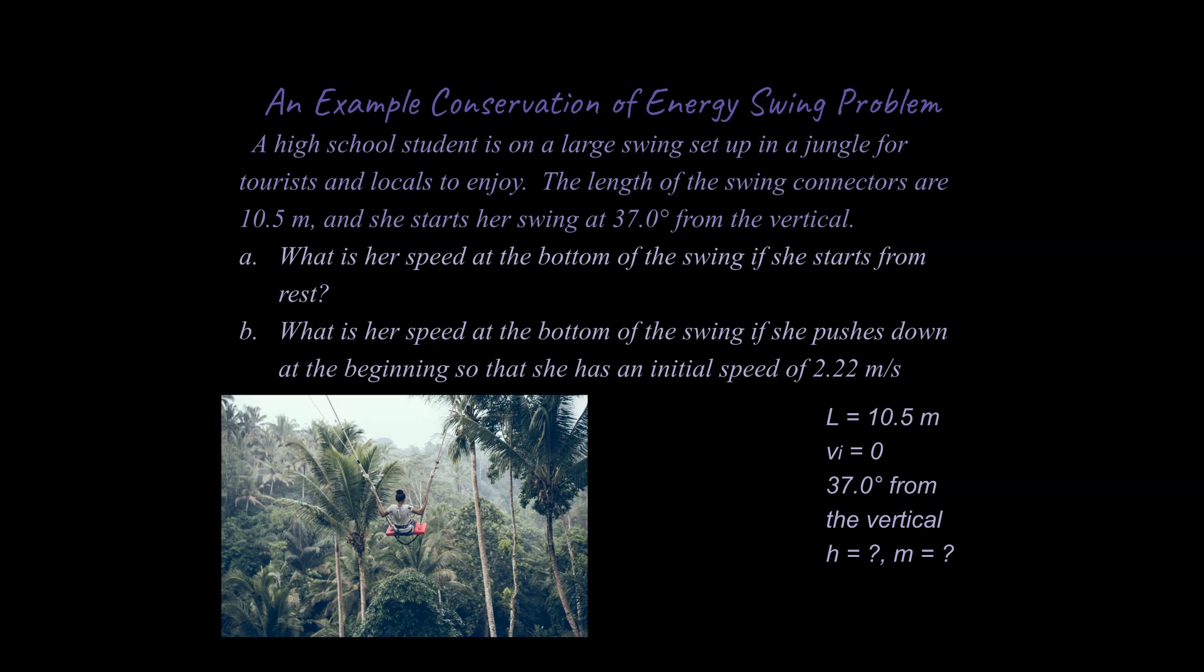so she has an initial speed of 2.22 meters per second? So I'm going to go ahead and write down some things we know. We know the length of the vine or bungee cords or whatever it is for this kind of problem. Sometimes you'll see Tarzan or just a chain swing or whatever it is. We know the length of this swing, and we know her initial speed is 0. For part A, for part B it's not. It's 2.22 meters a second.